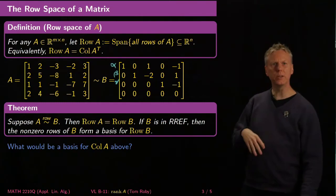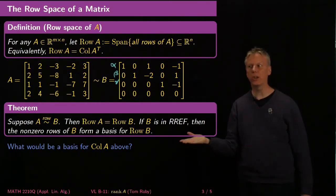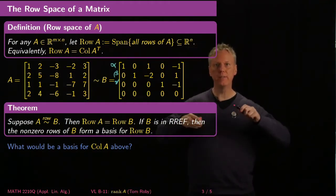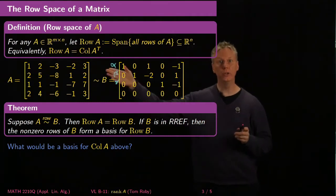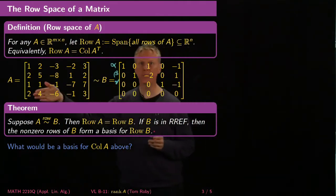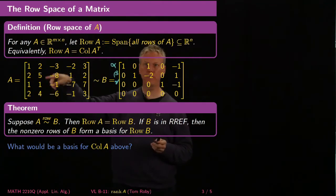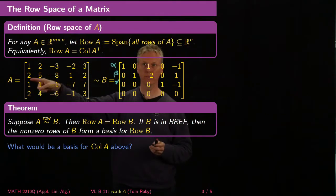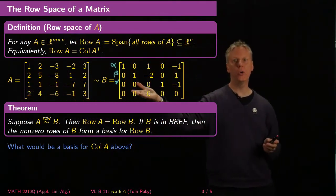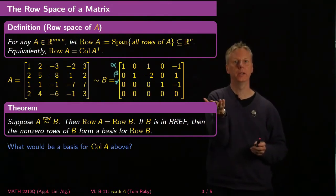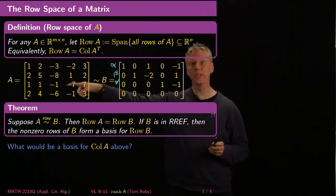Let's contrast this with the column space. When I do elementary row operations, I change the column space — and that's obvious even from this example. If you look at the span of the five column vectors in A, there are certainly some vectors with a non-zero fourth component; even just one vector has a two in the fourth component. But there's no way to write a linear combination of B's five columns that has anything but a zero fourth component.